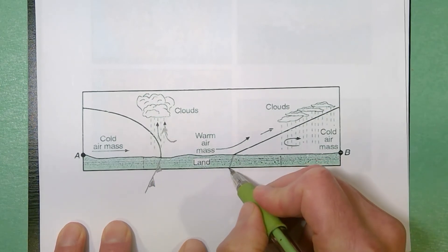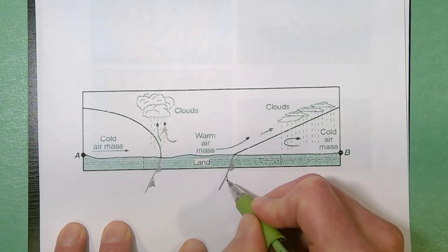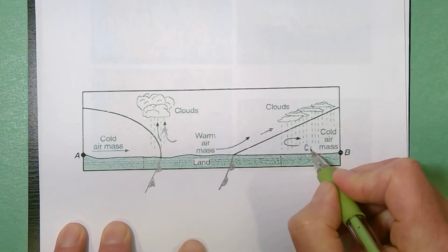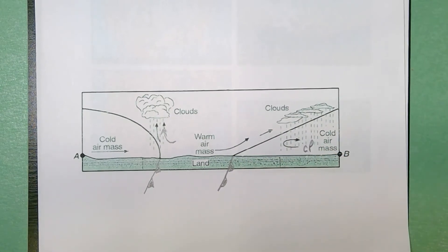Here I have a warm front. At the warm front the warm air rises over the cold air. So that would be a continental polar air mass.